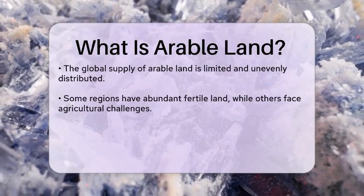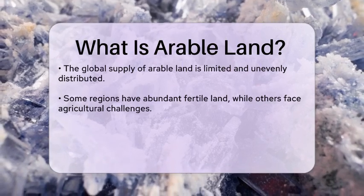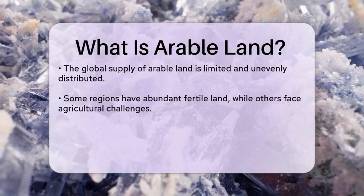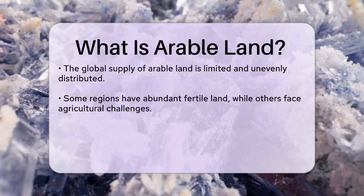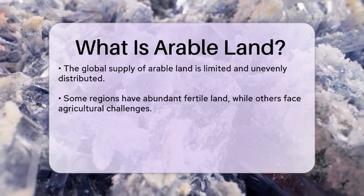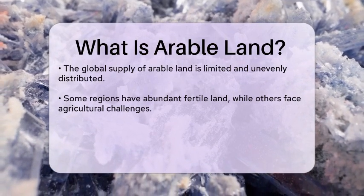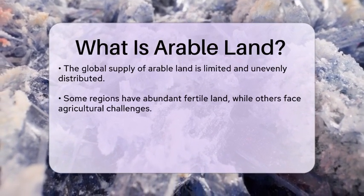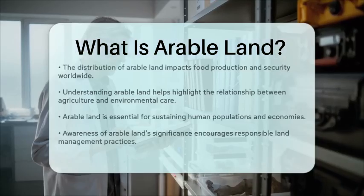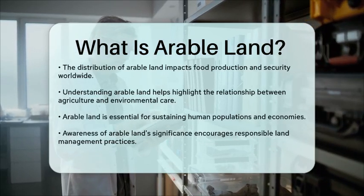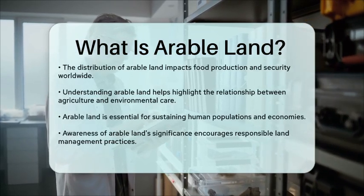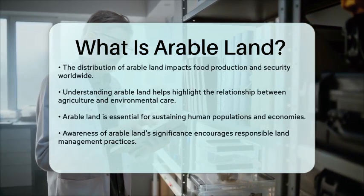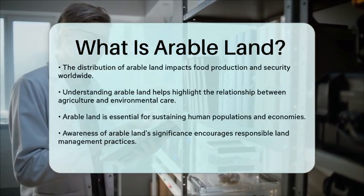Globally, the amount of arable land is limited and varies by region. Some countries have vast expanses of fertile land, while others struggle with limited agricultural space. This distribution affects food production and security on a worldwide scale.